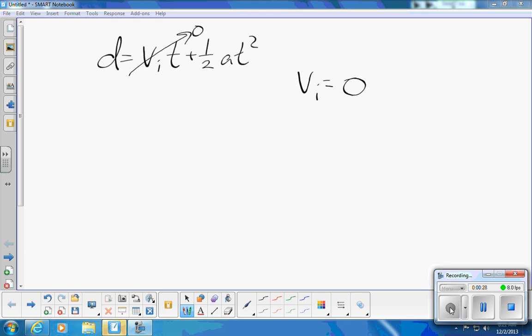So vi times t is equal to zero, and the formula becomes the shorter d is one half a t squared. If you're doing a problem where a car starts from rest or a rock is dropped from rest, this is the simpler version of the formula.